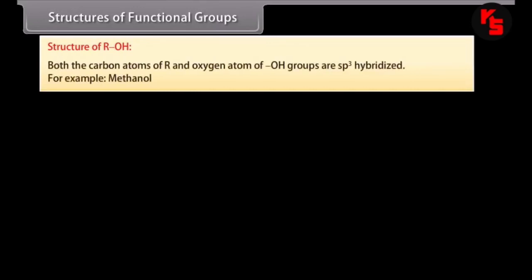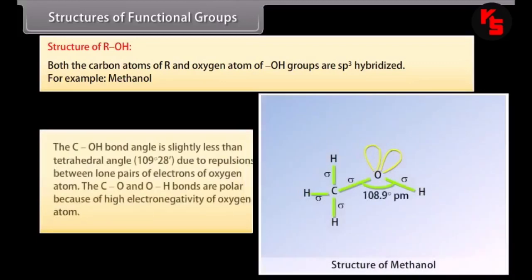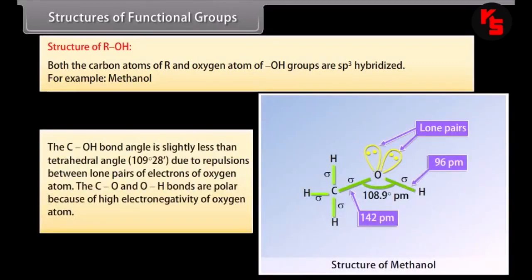Structure of ROH: both the carbon atoms of the alkyl group and the oxygen atom of the hydroxyl group are sp3 hybridized. For example, in methanol, the C-O-H bond angle is slightly less than the tetrahedral angle of 109°28' due to repulsions between lone pairs of electrons on the oxygen atom. The C-O and O-H bonds are polar because of the high electronegativity of oxygen.